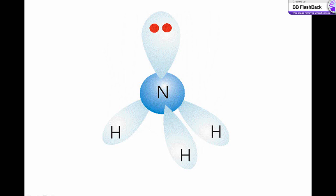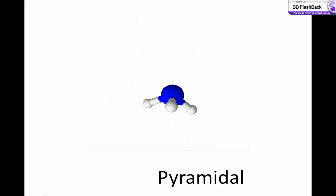However, when we allocate a shape to the molecule, we ignore the non-bonding electrons, and just consider the arrangement of the atoms. As a result, the shape is pyramidal.